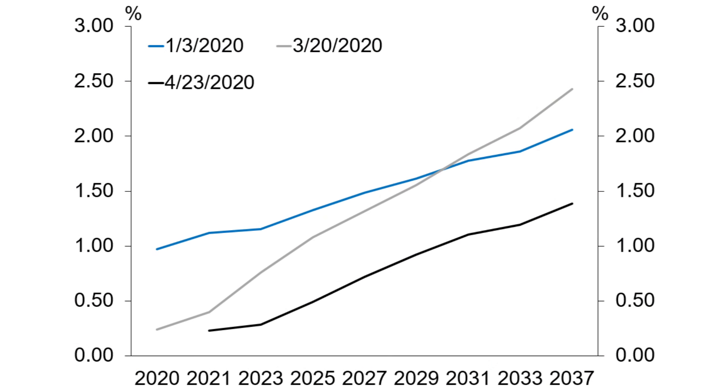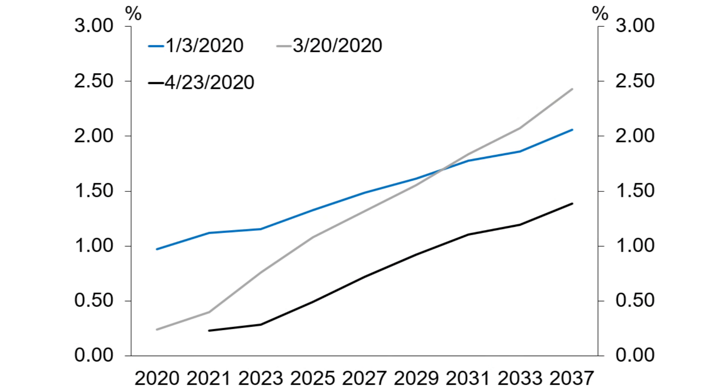It's early days yet, but there are clear signs that it is working, and I can show you how in these following charts. What you're looking at here is a chart of New Zealand government bond rates at different horizons — a yield curve.